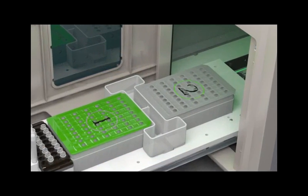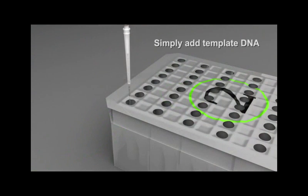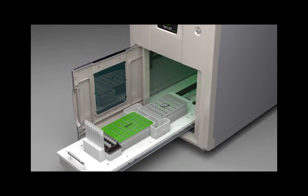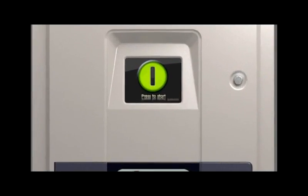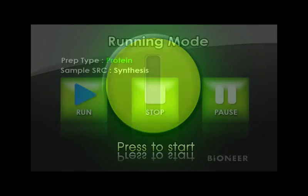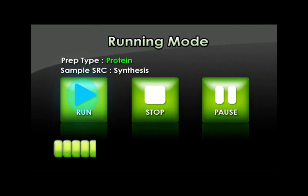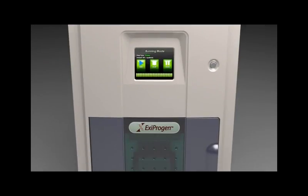To get started, you simply add 5 to 10 micrograms of template DNA to the expression cartridge. 1 to 16 different proteins can be synthesized and purified using Exiprogen. To start the protocol from the convenient touch screen, simply enter the protocol number and press Run.